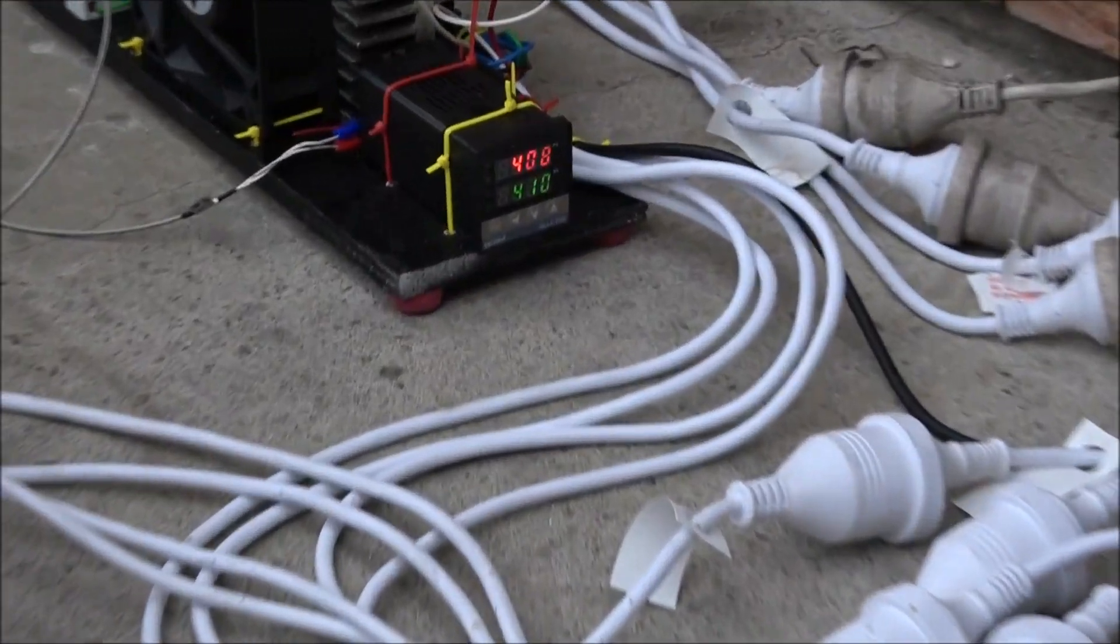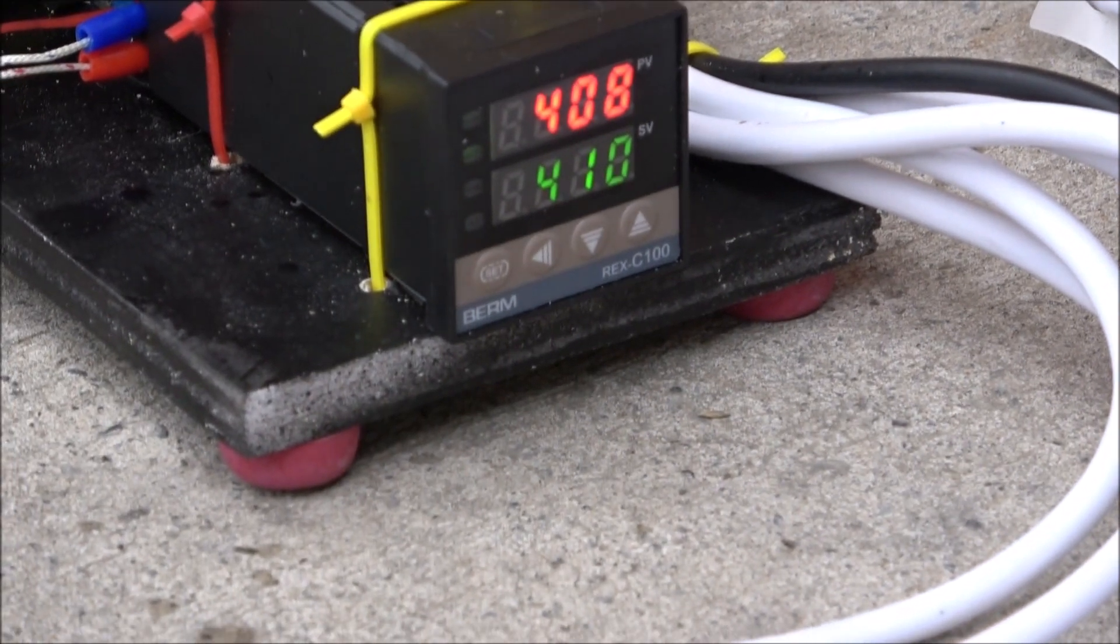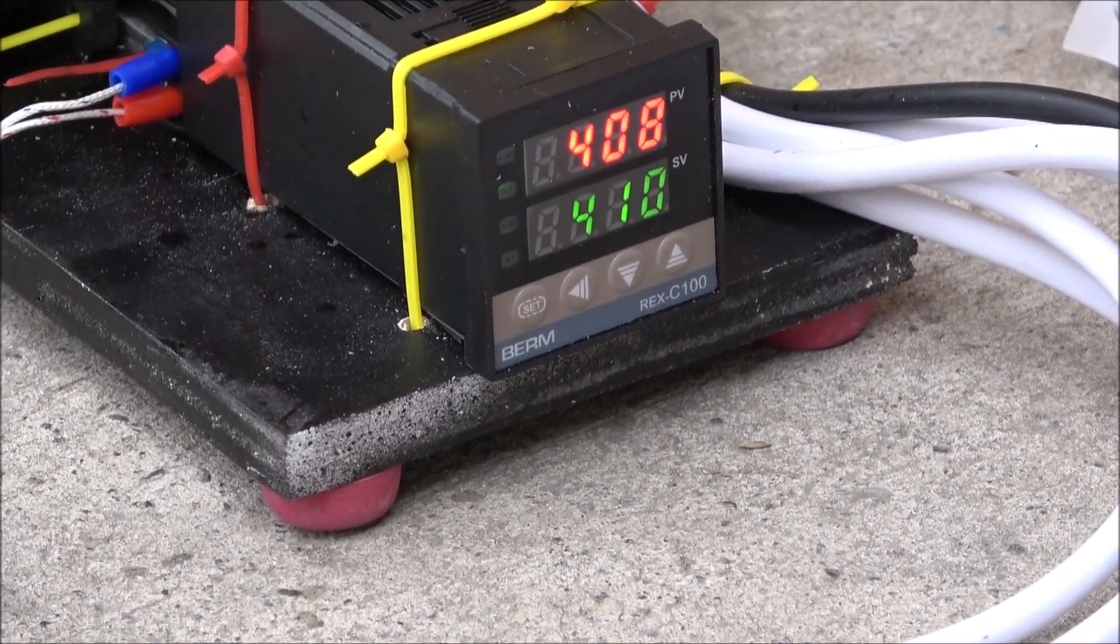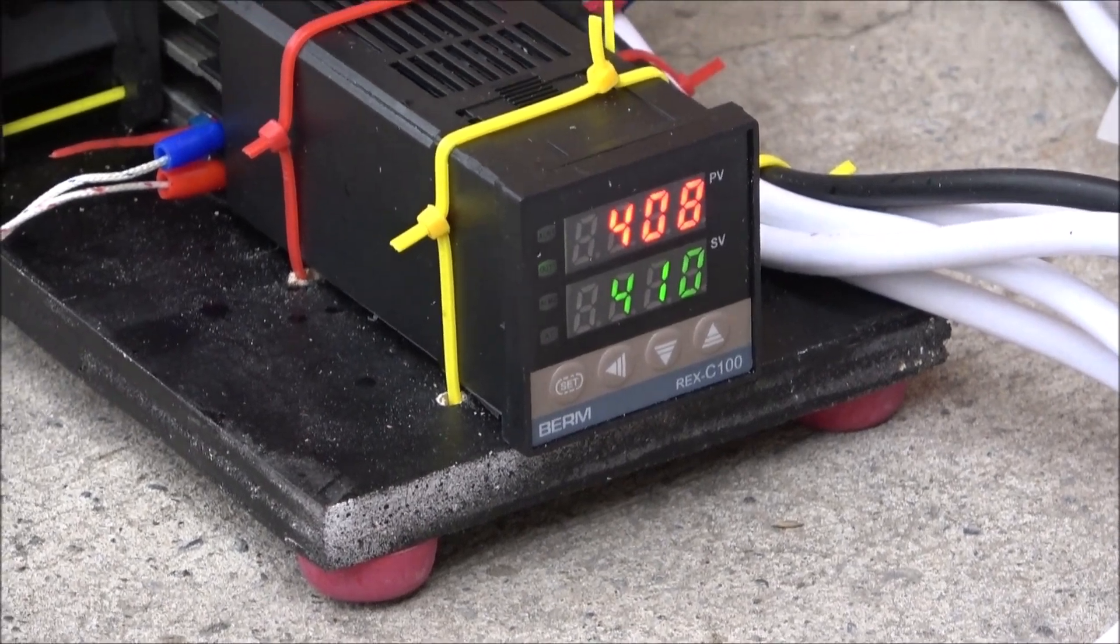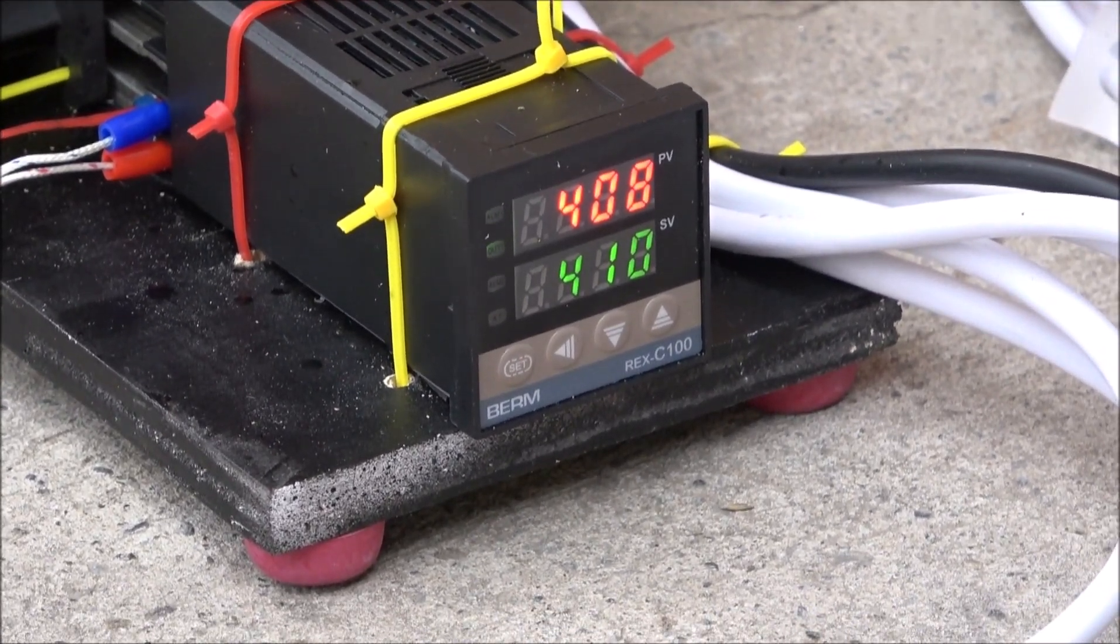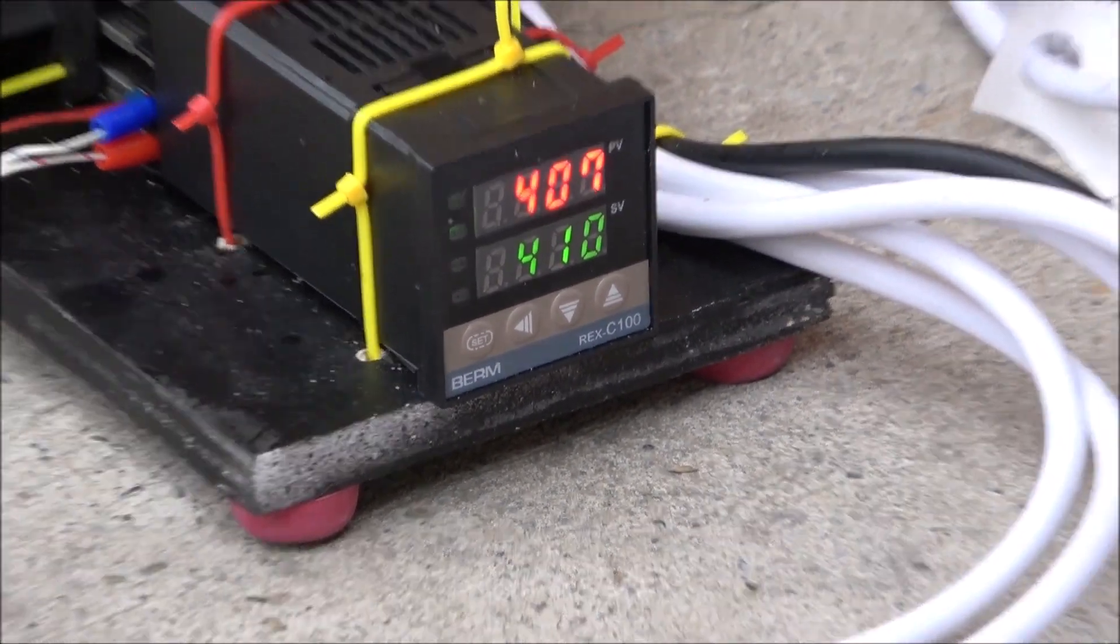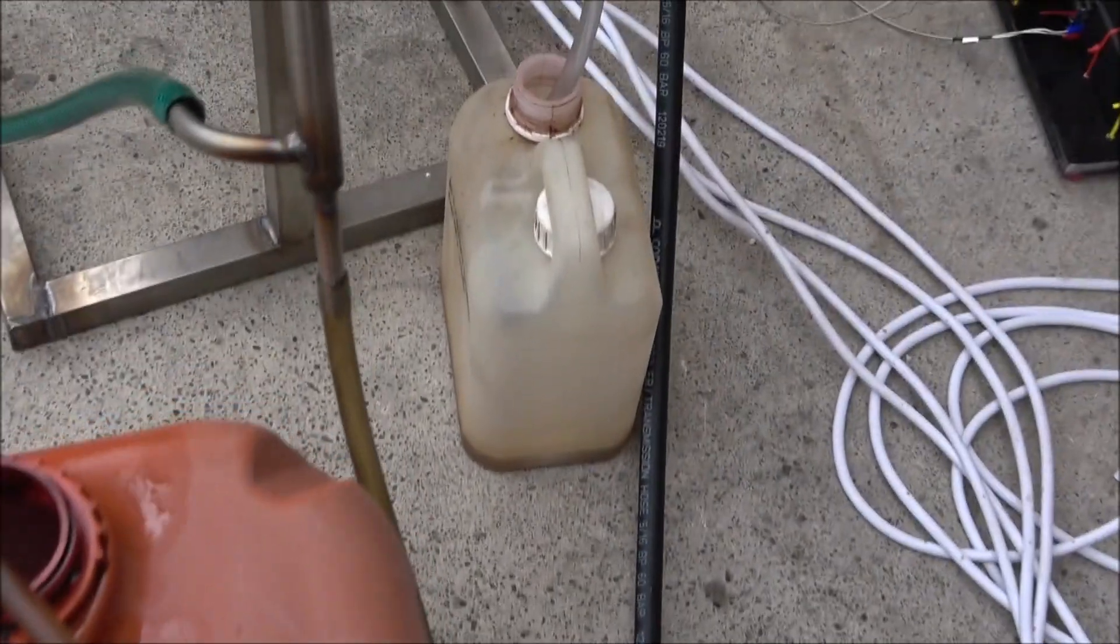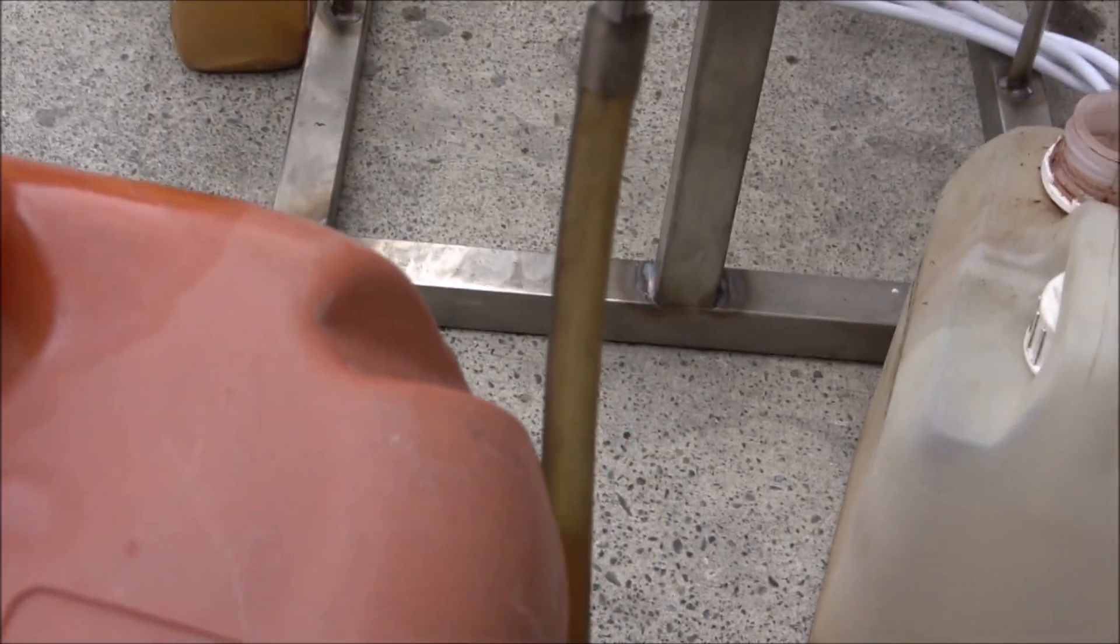Here's our distillation temperature: 408 actual temperature of the reactor, and the control unit is set up to 410 Celsius. Now actual production is here.